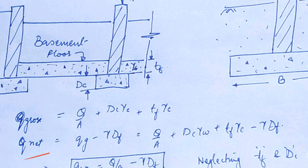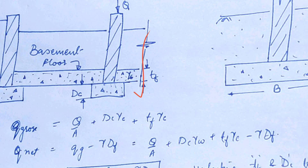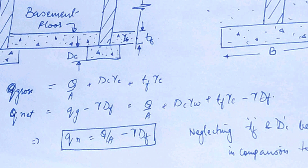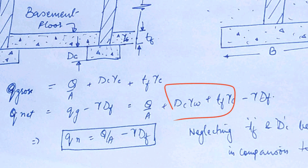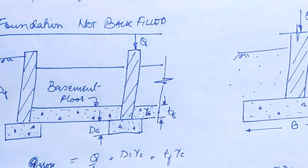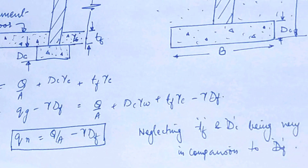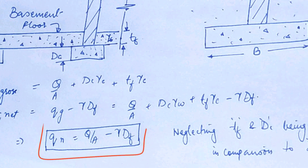Now Q_net equals Q_gross minus overburden pressure, and the overburden pressure is γ·DF. Putting in the values and subtracting, Q_N equals Q/A minus γ·DF, because we can neglect the terms for DF and DC as they are comparatively very small relative to the depth of the footing. So Q_N equals Q/A minus γ·DF.